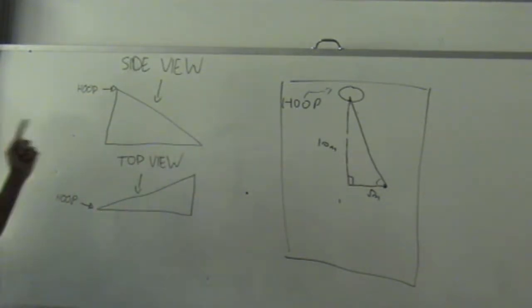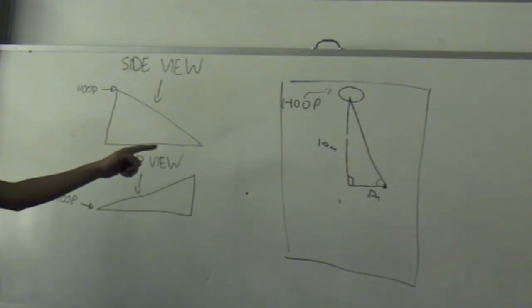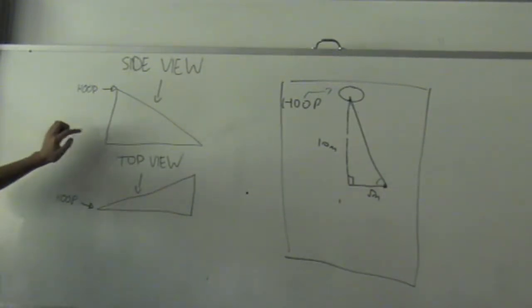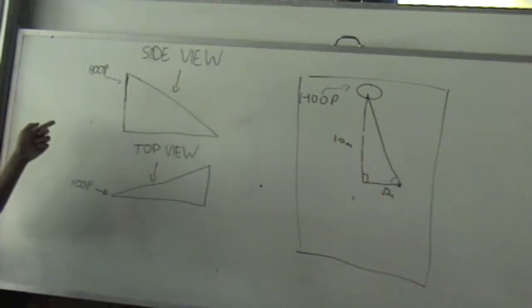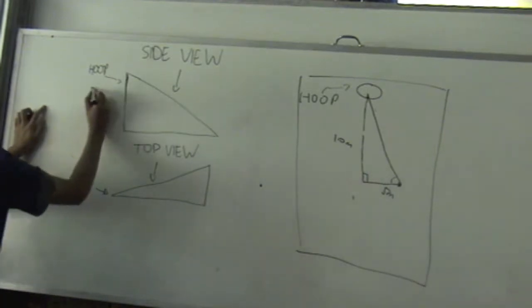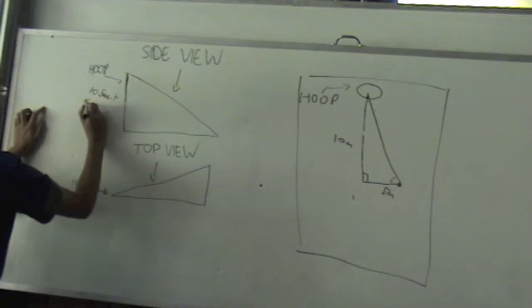However, if we were to rotate that and turn that into the side view of the triangle, it would be like that. That being the hoop, which is roughly 10 feet, 3 meters. We all know the height of a hoop is 10 feet, which is roughly 3 meters.